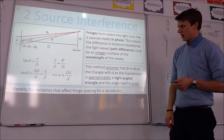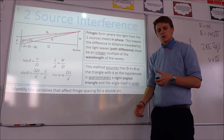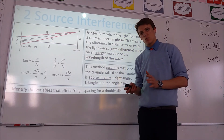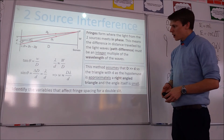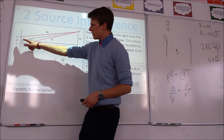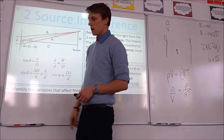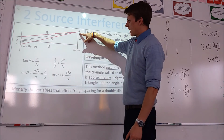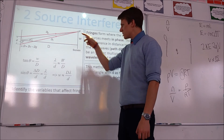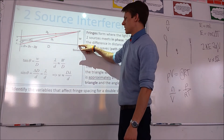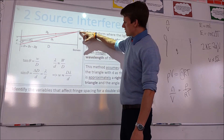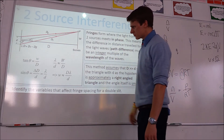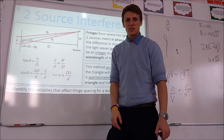Now let's look at how we can work out where our fringes are going to be — what equations can we use to model two-slit interference. Looking at our diagram: these are our two slits, and this is the screen on which we view the interference pattern. P is where we get a fringe, and at the centre we also get a fringe. W is the spacing between the fringes, which is equal for all of them, and D is the distance between the slits and the screen.